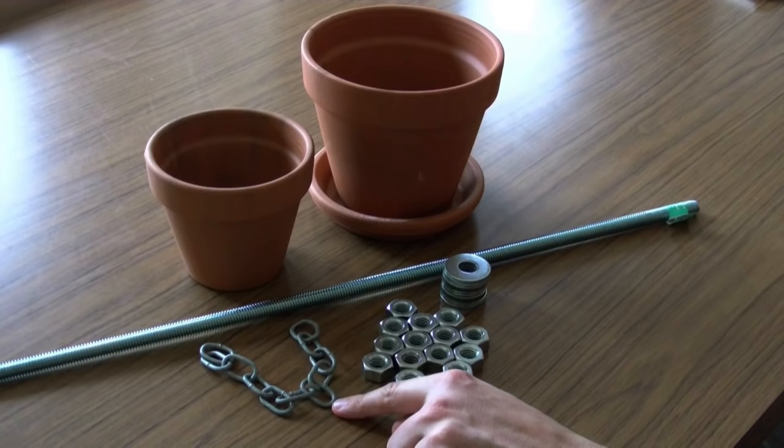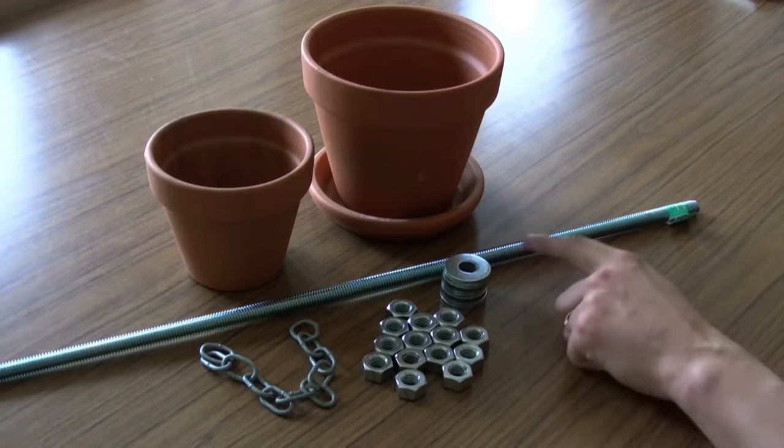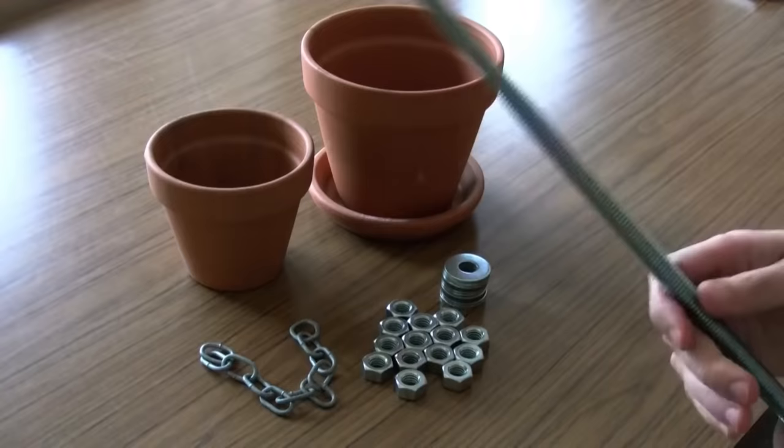You'll need 14 nuts, half inch, you'll need 11 half inch washers, and you'll need a length of threaded rod, also half inch. Now the rod I have here is about 24 inches, but I'm going to need to cut it because I only need about 11 inches.